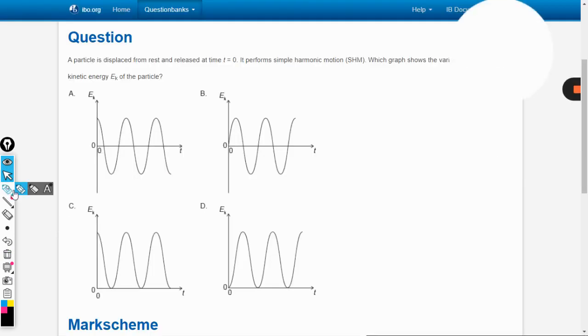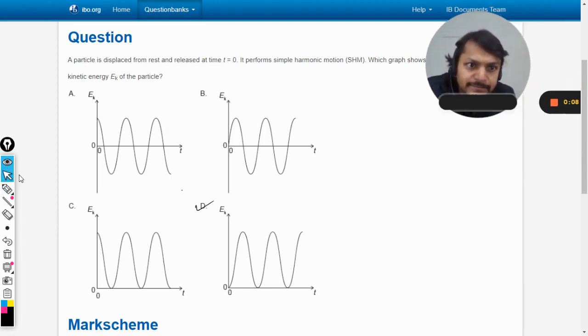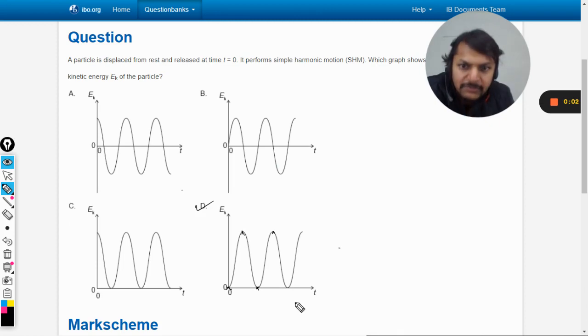If this graph is clear to you, moving to the question back again: which is the correct graph according to you? Obviously it comes out to be D. The motion starts from zero, goes to maximum, again zero, goes to maximum, again zero. So this is it.